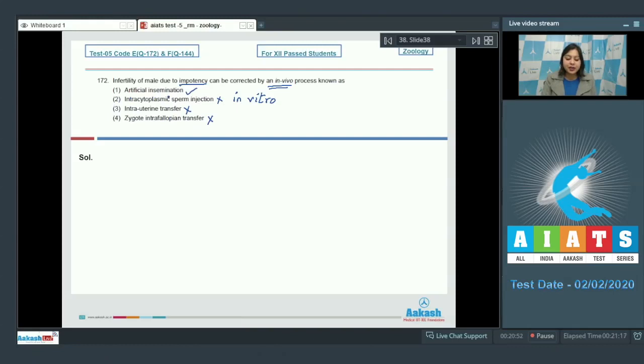So here artificial insemination can be used to correct infertility of male due to impotency that is when the male is unable to achieve erection or has very low sperm count. So the correct answer becomes option number 1 that is artificial insemination. Moving on to the next question.